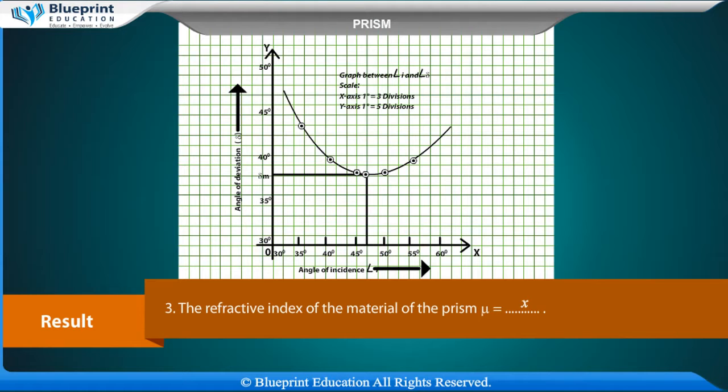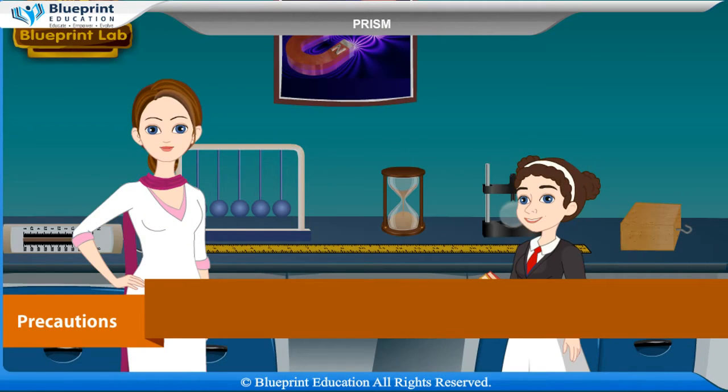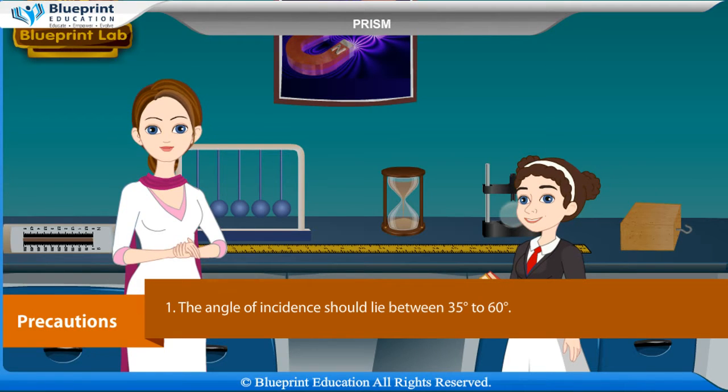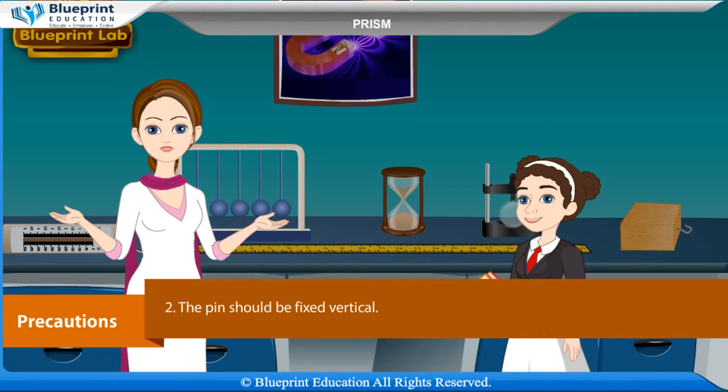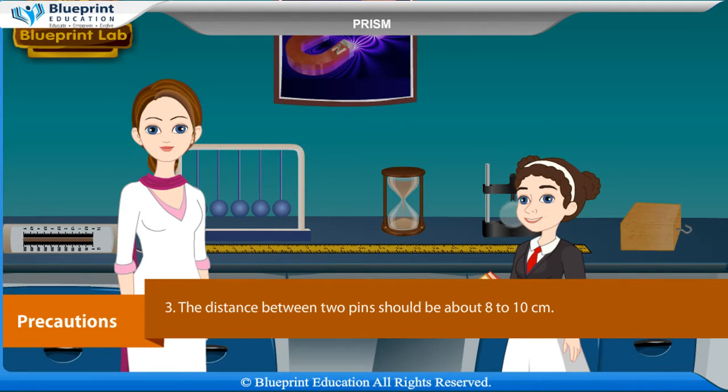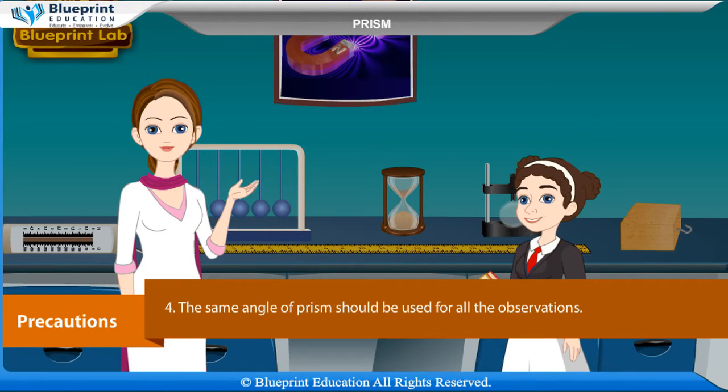Precautions: The angle of incidence should lie between 35 degree to 60 degree. The pins should be fixed vertical. The distance between two pins should be about 8 to 10 cm. The same angle of prism should be used for all the observations.